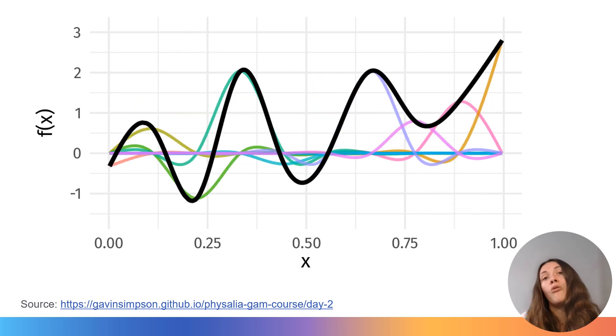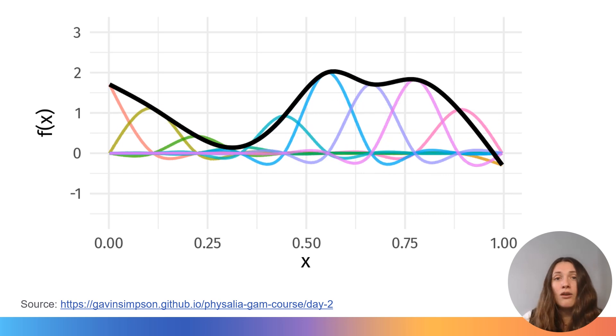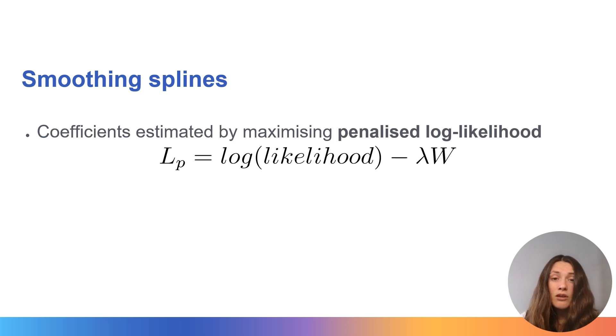So how does the software that we're using estimate these coefficients? Well, there are many different ways that we could calculate these coefficients, but the general consensus across GAM experts is to use penalised log likelihood which produces the most stable results. This involves assigning a penalty to the log likelihood of our model, and that ensures that the model does not overfit the data.